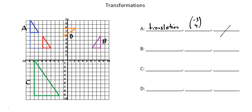That is the complete description of the transformation in image A. Now let's move to image B. Looking at image B, we can see we don't have a translation because the orientation isn't exactly the same as the object. We don't have an enlargement because the lengths are the same, and we don't have a rotation. The transformation in B isn't a result of turning the object.